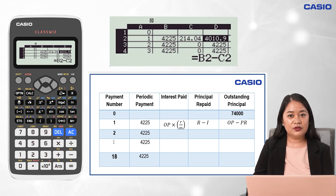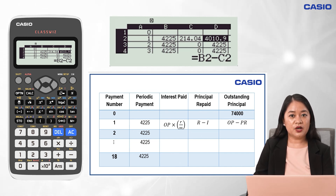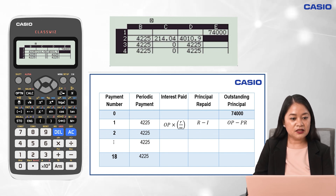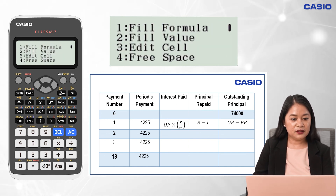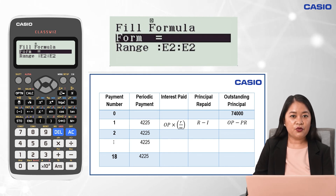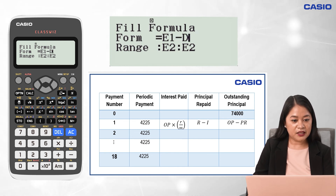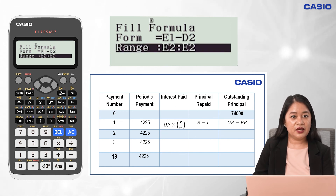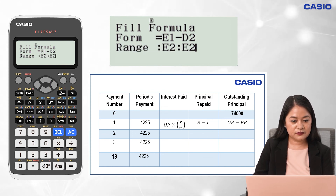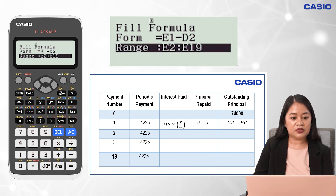Last step: to compute the Outstanding Principal, deduct the Current Principal Repaid from the previous Outstanding Principal. For the formula, we input E1 minus D2. From cell E2, press Option and 1. For the form, input Alpha, Cosine, 1, minus Alpha, Sine, 2, then press Equal. For the range, that is from E2 to E19. Press the Equal button twice.